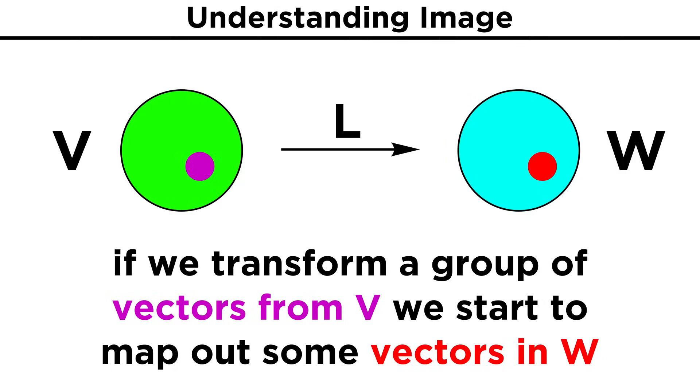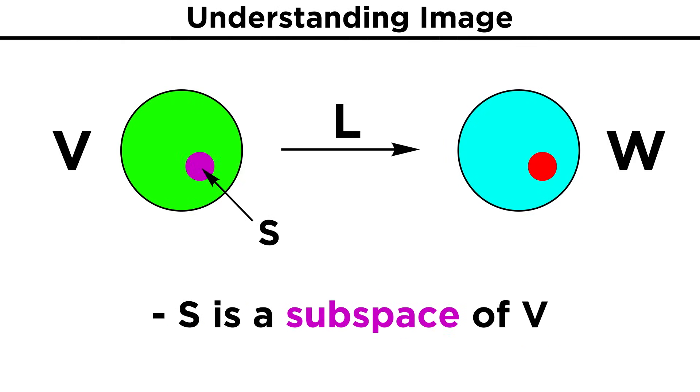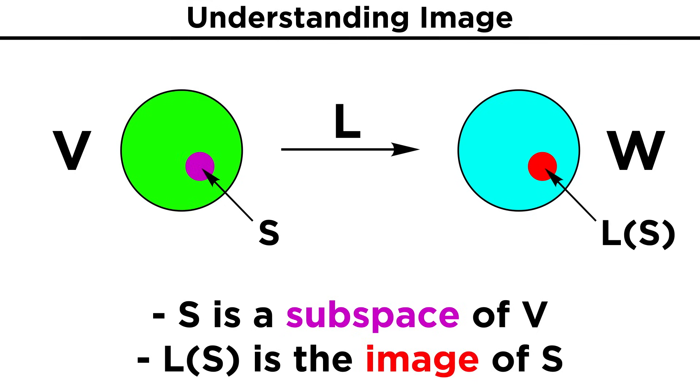This is the idea behind what we mean by image. If we take a subspace of V, let's call it S, this is a group of vectors from V that can then be transformed. The set of vectors that we can get from this transformation is what is known as the image of S.